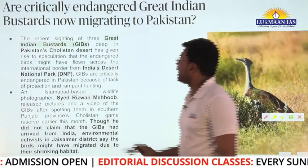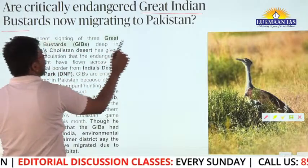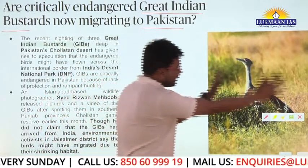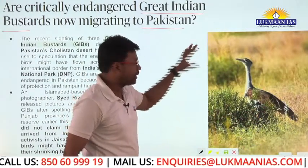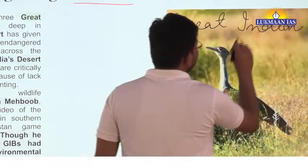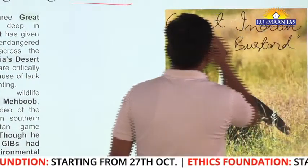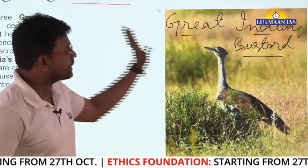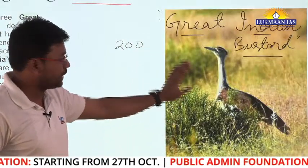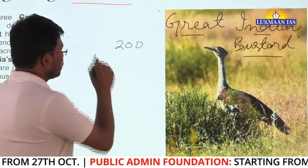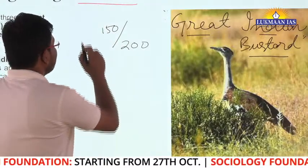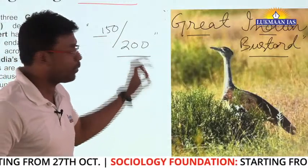The article asks: 'Are critically endangered Great Indian Bustards now migrating to Pakistan?' The Great Indian Bustard is a bird with a total population of around 200 across the globe. Out of those 200, about 150 live in India, in the Jaisalmer district of Rajasthan. This makes it a very important species.